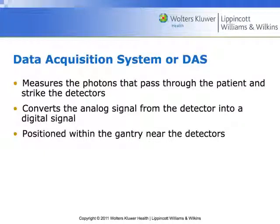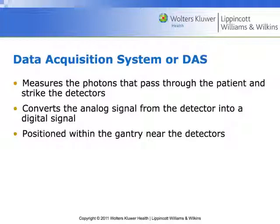The data acquisition system, or DAS, measures the photons that pass through the patient and strike the detectors. It converts the analog fluorescent signal from the detectors to a binary digital signal. It's located within the gantry, floating right beside the detector array, so the analog signal is immediately converted to a digital signal.